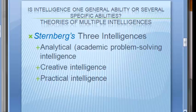Creative intelligence is demonstrated in reacting adaptively to new situations and generating your own new ideas. Practical intelligence covers everyday tasks — your ability to manage your time well and manage other people. It depends less on academic problem-solving and relies more on an ability to manage yourself and others. All three types of intelligence are important in life, not just academic intelligence.